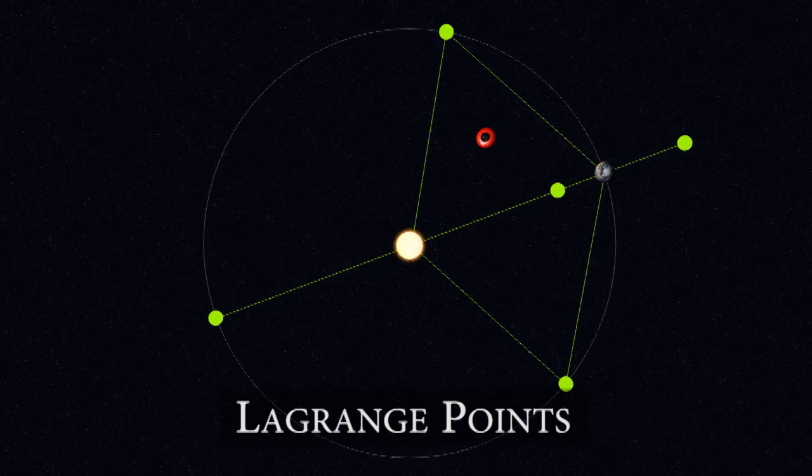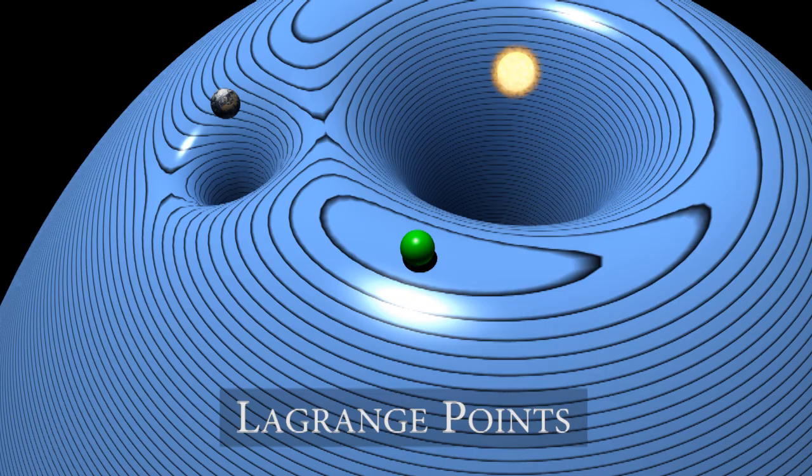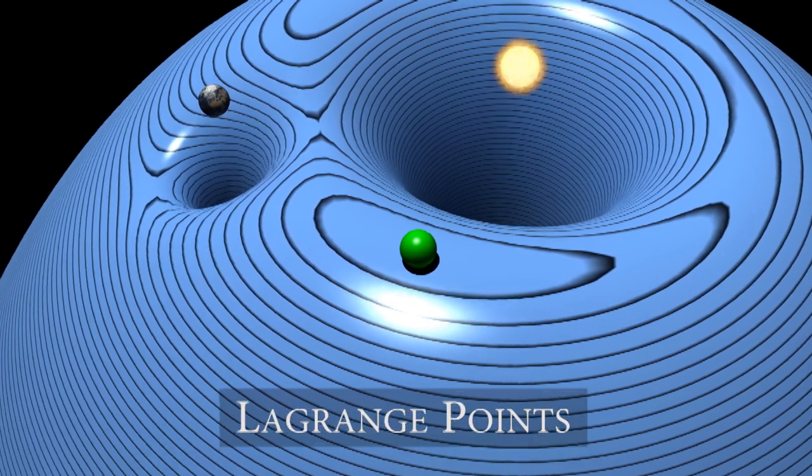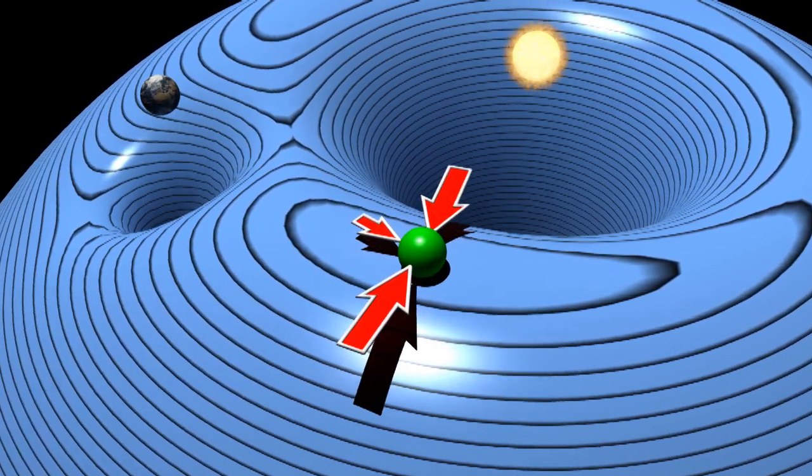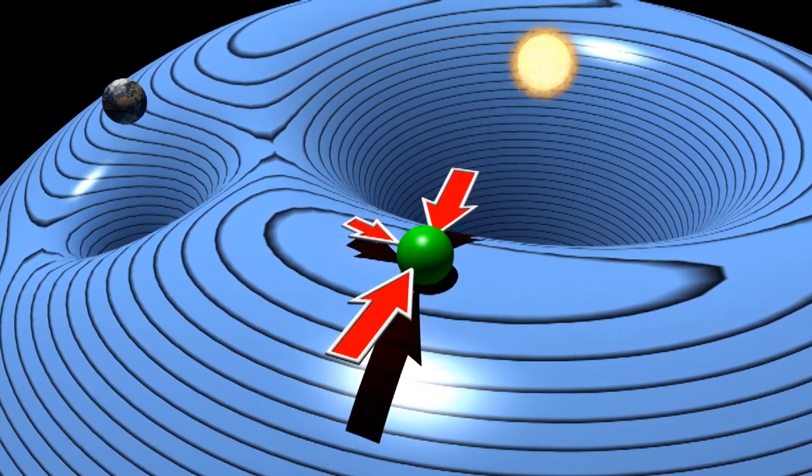These are called the Lagrange points. The Lagrange points are places where the forces acting on an object are perfectly balanced.